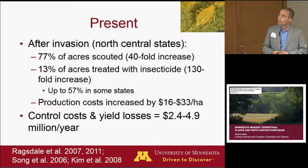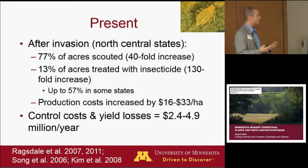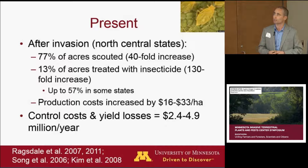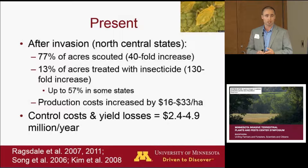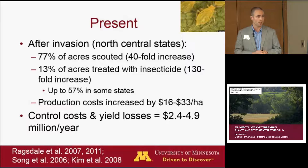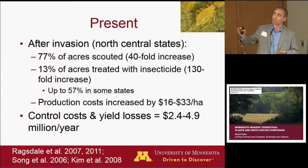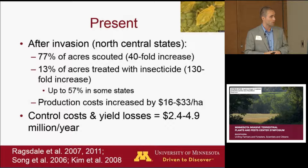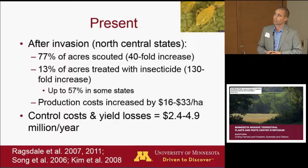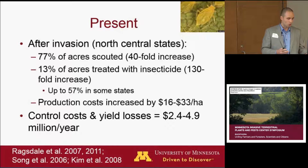So I talked about the past — what growers had to contend with on the insect end of things — and now the present, post-soybean aphid invasion. We've got 77% of soybean acres being scouted: a 40-fold increase from the pre-soybean aphid scenario, and a 130-fold increase in acres treated with insecticides. It could be 13% on average; some states it's 57%. My recent survey work indicated 37% of acres in Minnesota treated for soybean aphid. That resulted in an increase in production costs of $16 to $33 per hectare. These control costs plus yield losses amount to more than $2 million per year.